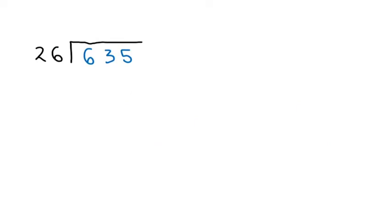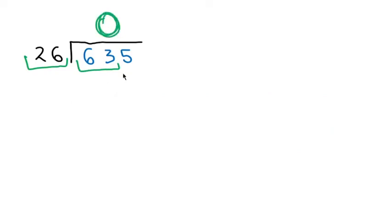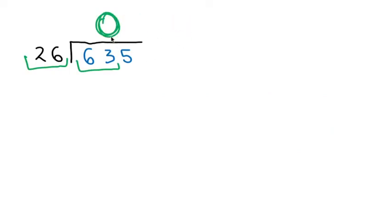It's very simple: if I have two digits here in the divisor, I am going to take two figures also in the dividend. That causes my answer to start being placed here — this is where the answers go, the numbers that are going to be the results. In this space I'm going to start placing my result. To start, we have to ask ourselves: how many times does 26 fit into 63?